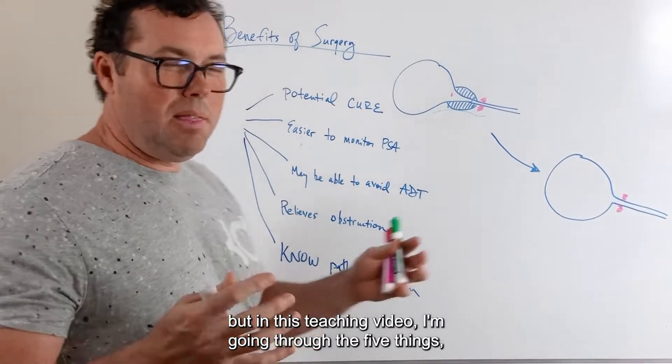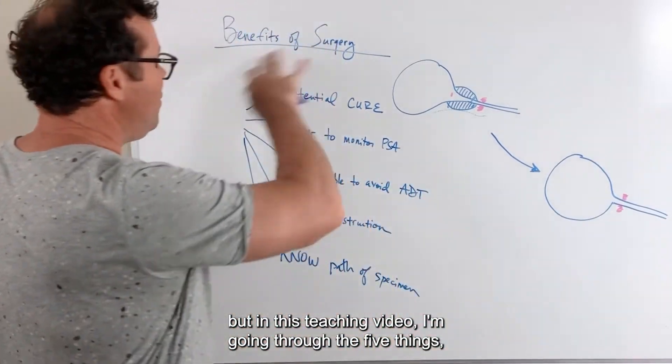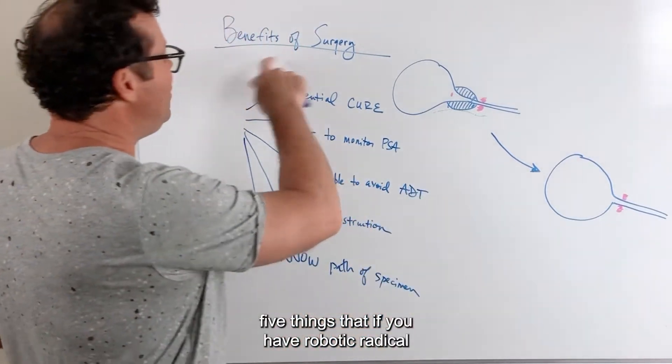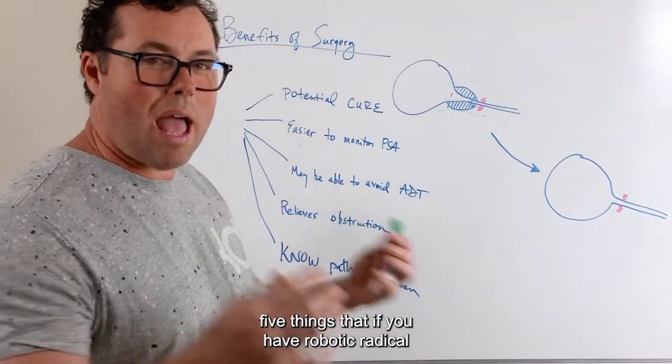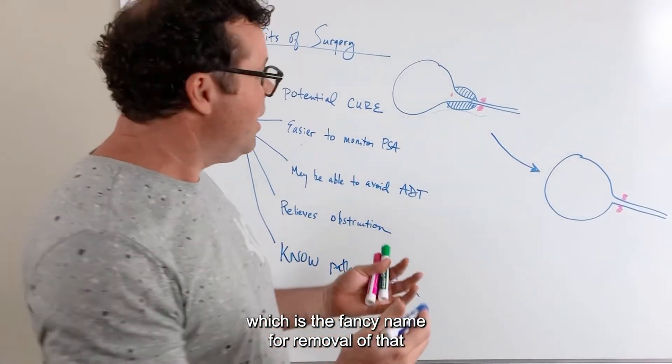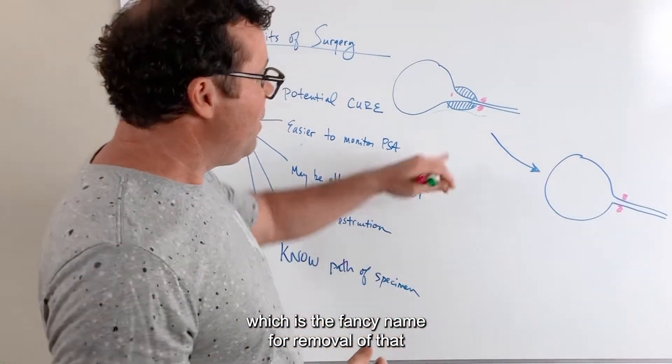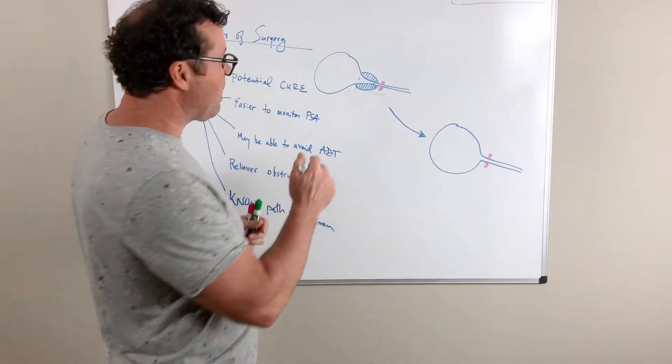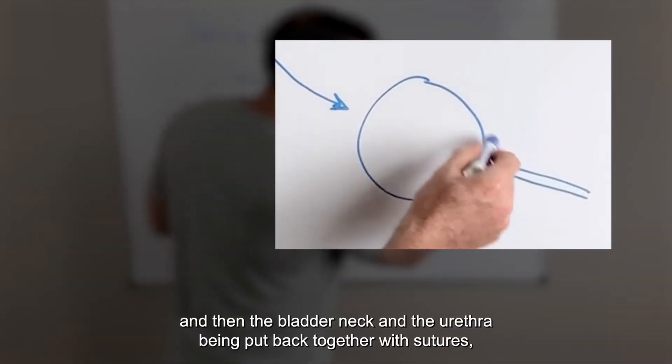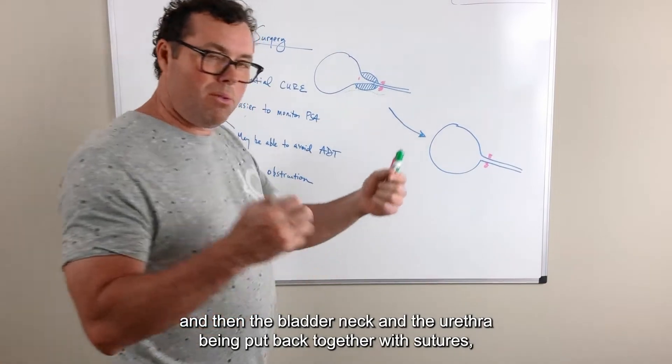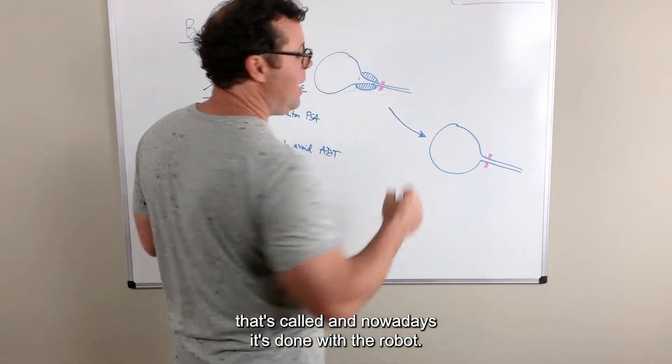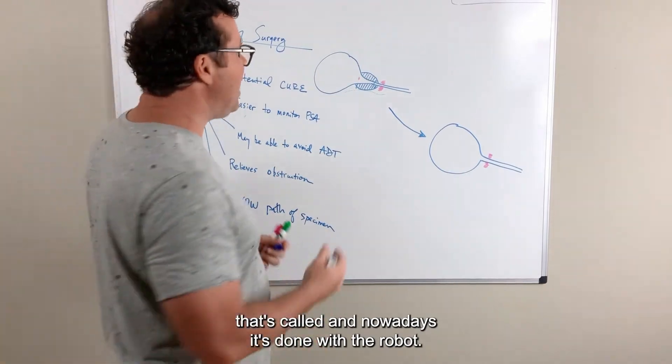But in this teaching video, I'm going through the five things that if you have robotic radical prostatectomy, which is the fancy name for removal of that prostate, and then the bladder neck and the urethra being put back together with sutures. Nowadays it's done with the robot.